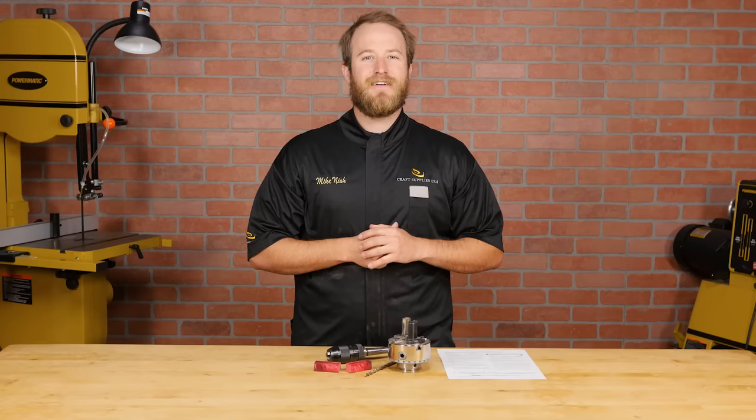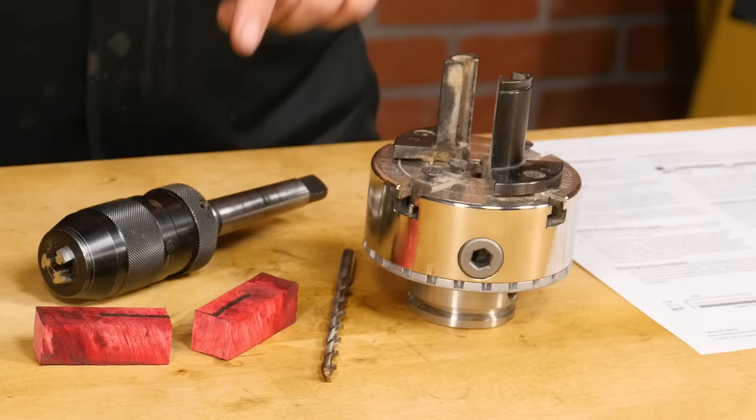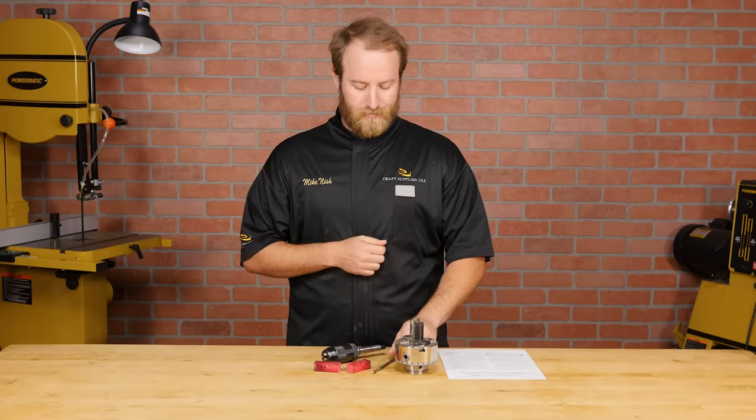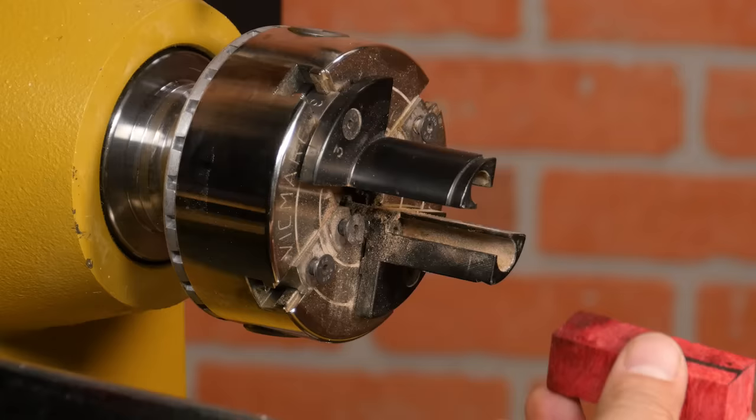Cut the blank on your marks with your preferred method. Next we need to drill the holes in our pen blanks. I'm going to be drilling on the lathe because it's the most accurate and easiest way to do this. Check your instructions that came with your pen kit to verify you have the right drill bit. For this pen kit we're going to be using a seven millimeter drill bit.